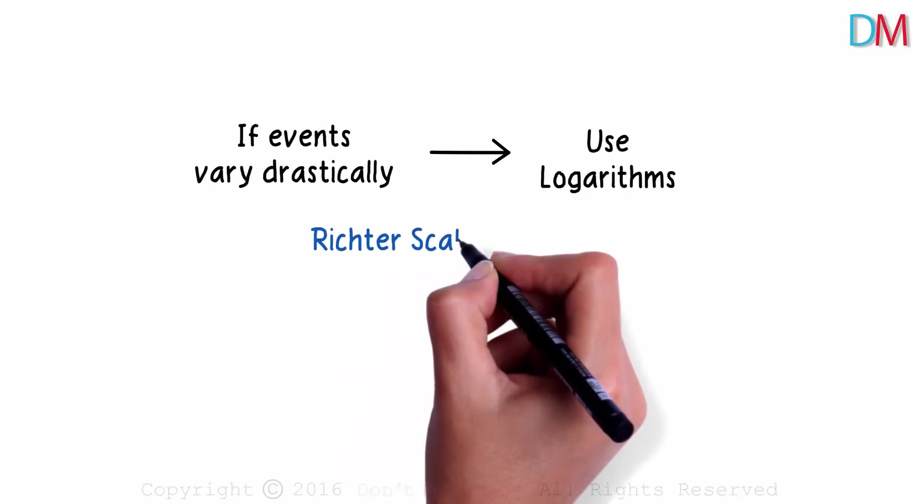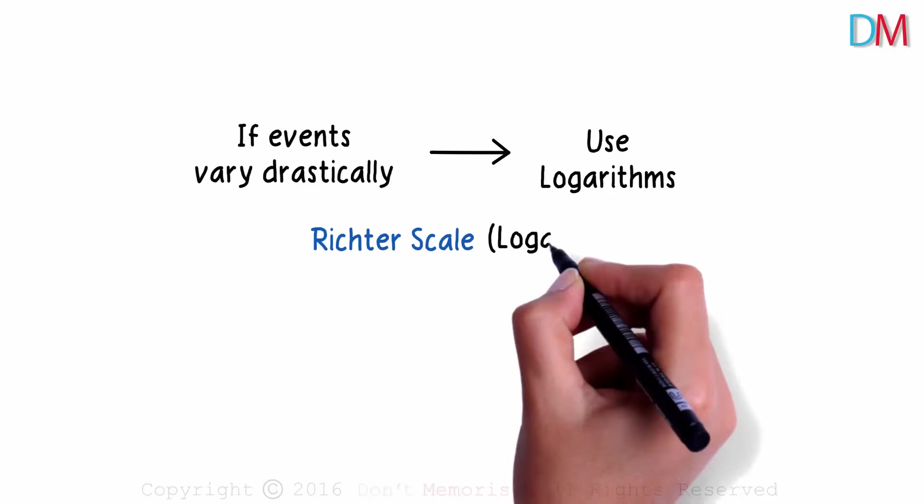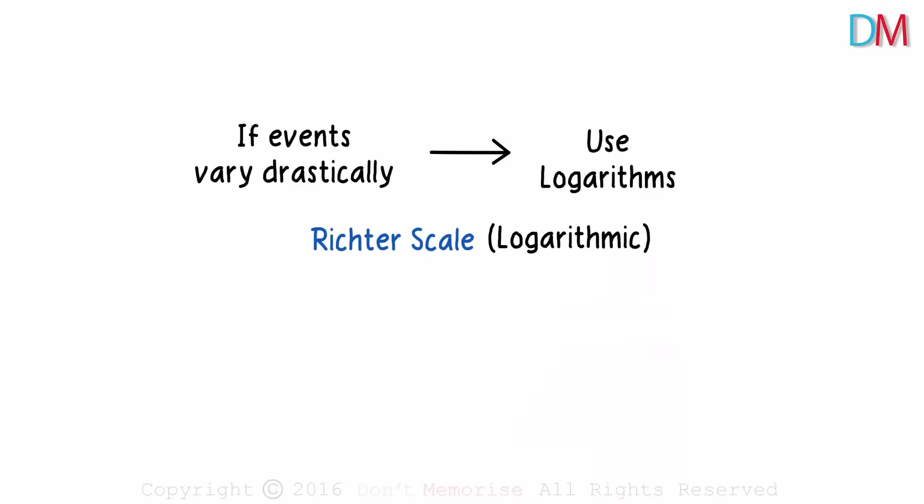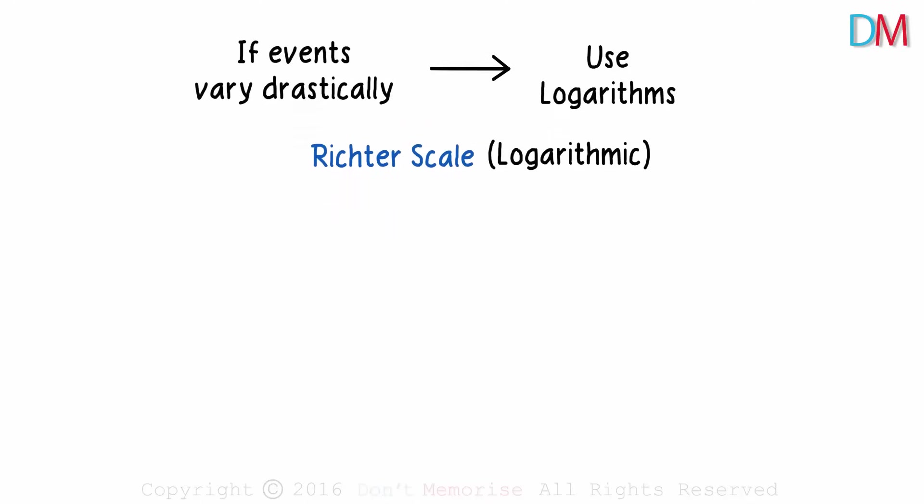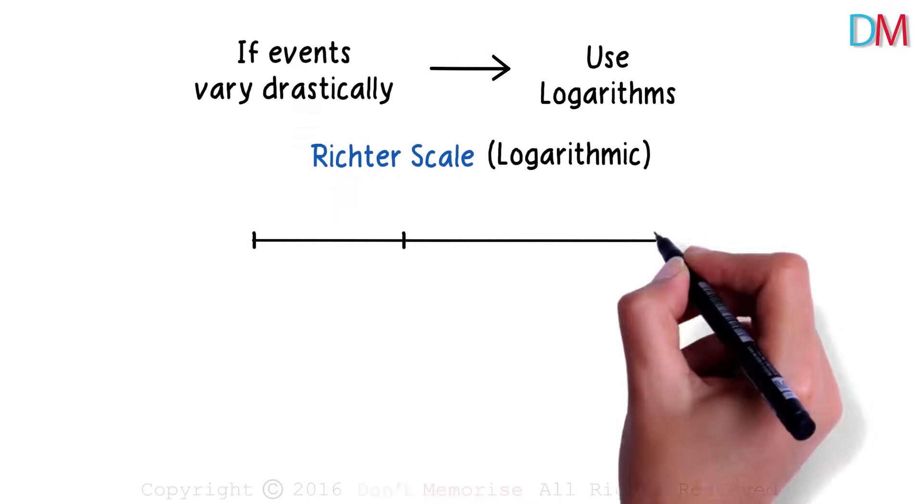So in layman terms, we can say that if the events vary drastically, we can use logarithms. And a very common example of that is the Richter scale which is used to measure earthquakes. It uses a logarithmic scale. To understand this, let's talk about the earthquakes that happened in 3 different countries.